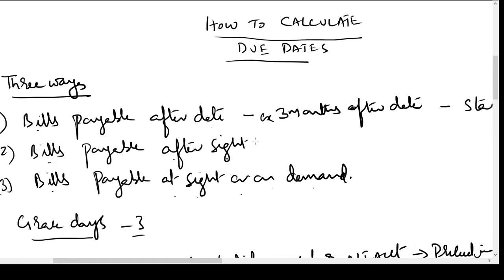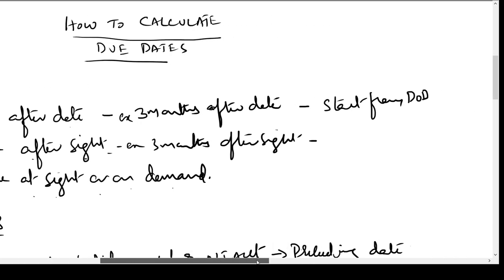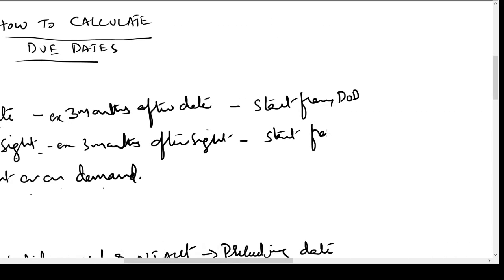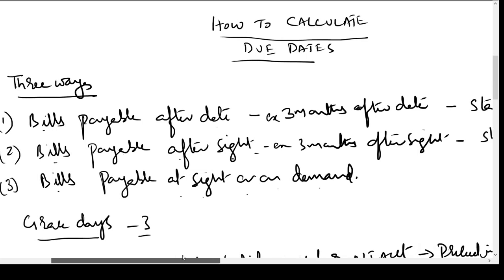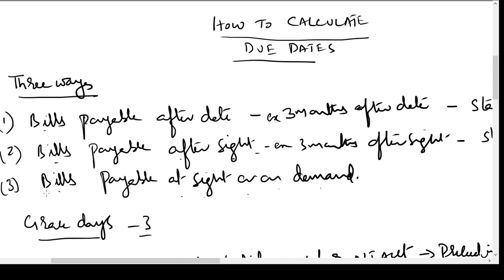Bills payable after sight — for example, 'three months after sight' — means the duration will start from the date of acceptance by the drawee, the date on which the drawee writes the word 'accepted' on the bill of exchange and signs it. Bills payable at sight or on demand means whenever the drawer demands payment and shows the bill to the drawee, the drawee has to make the payment.